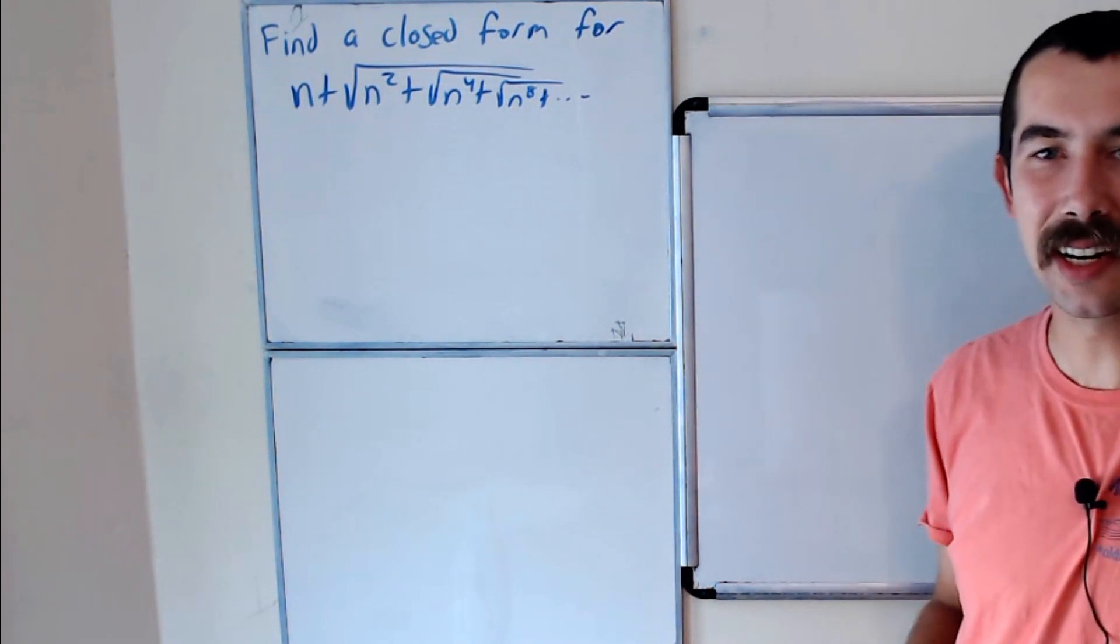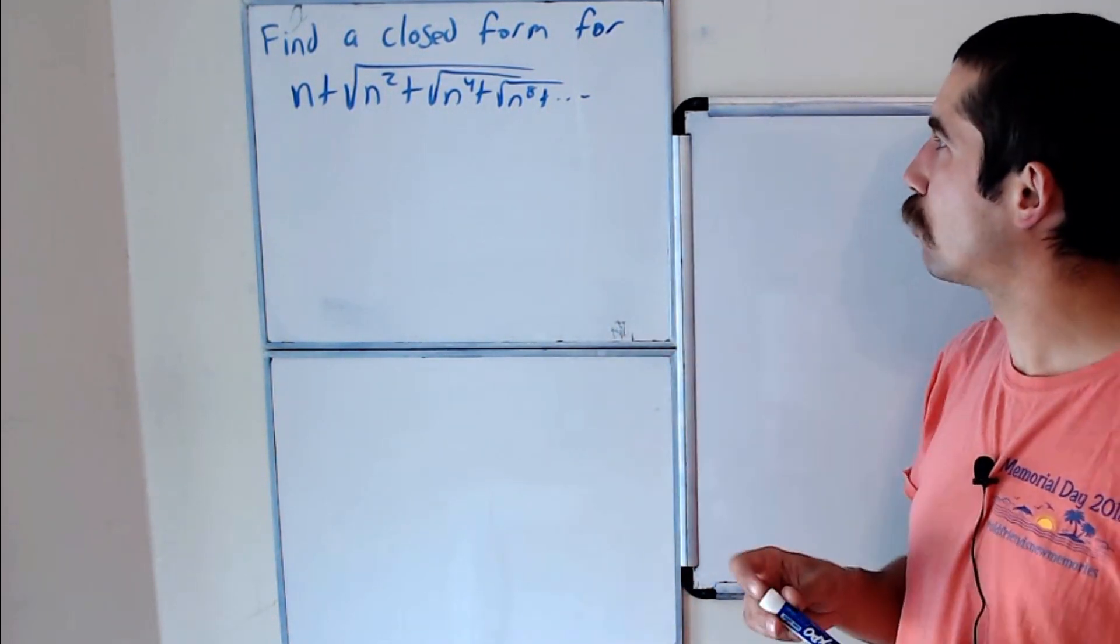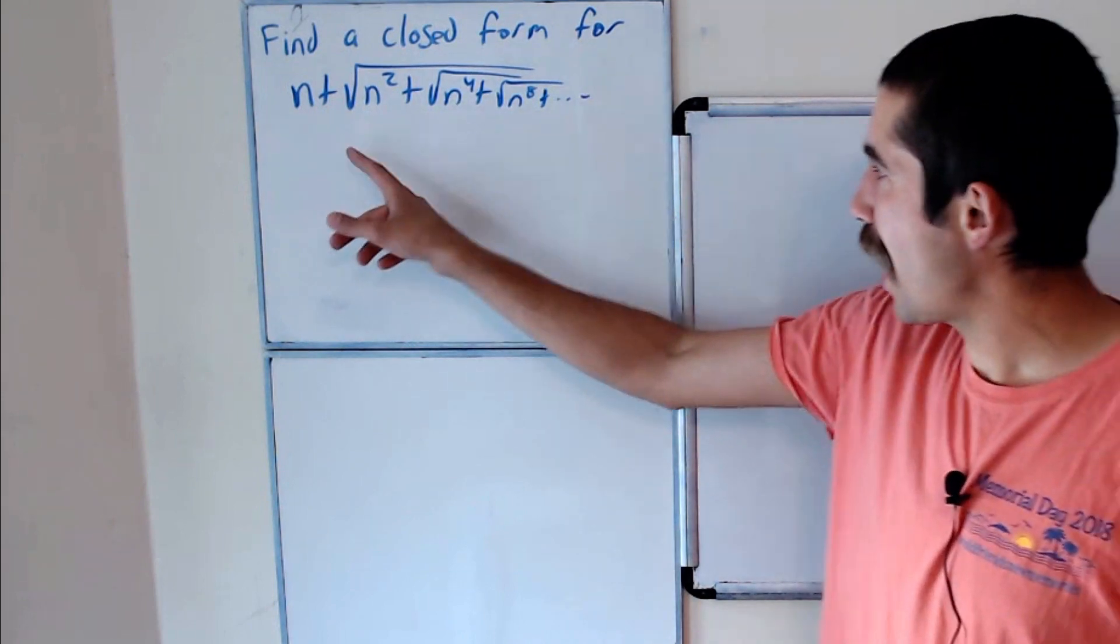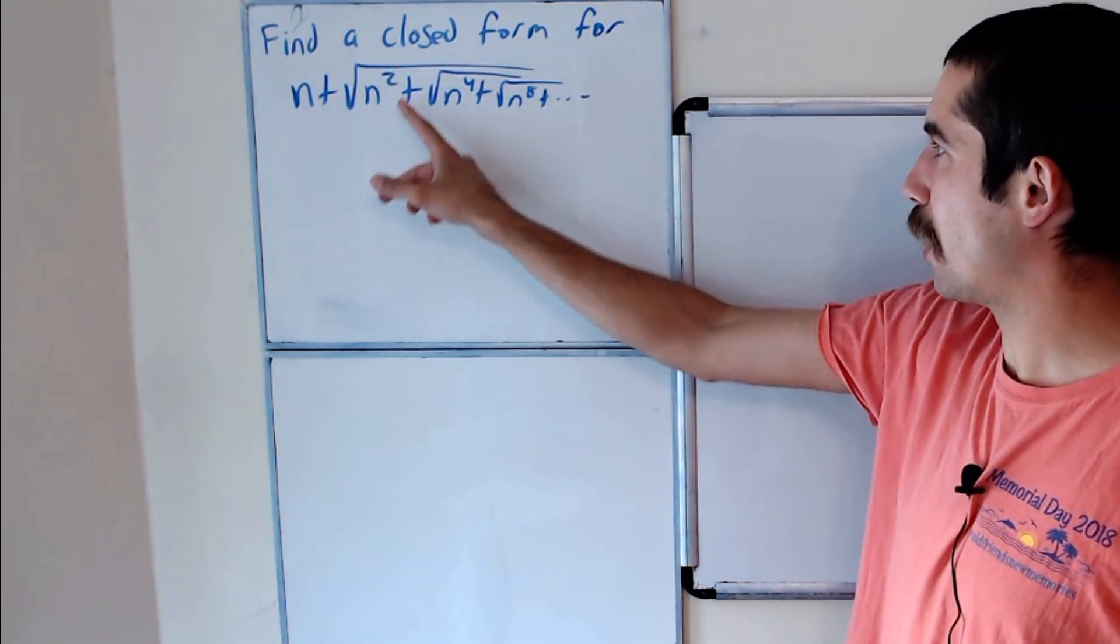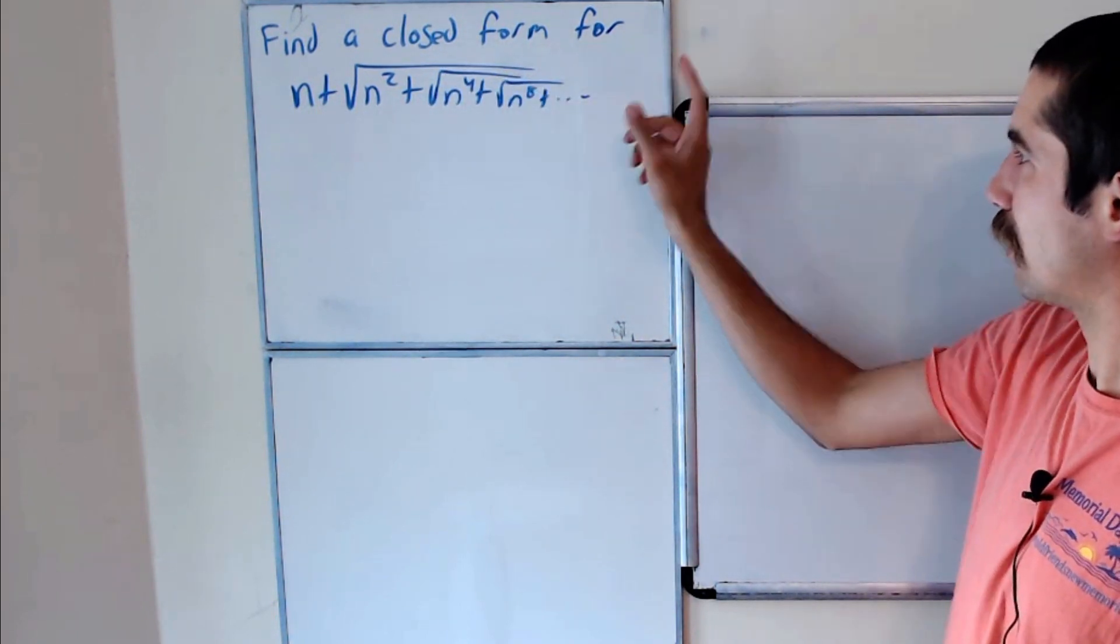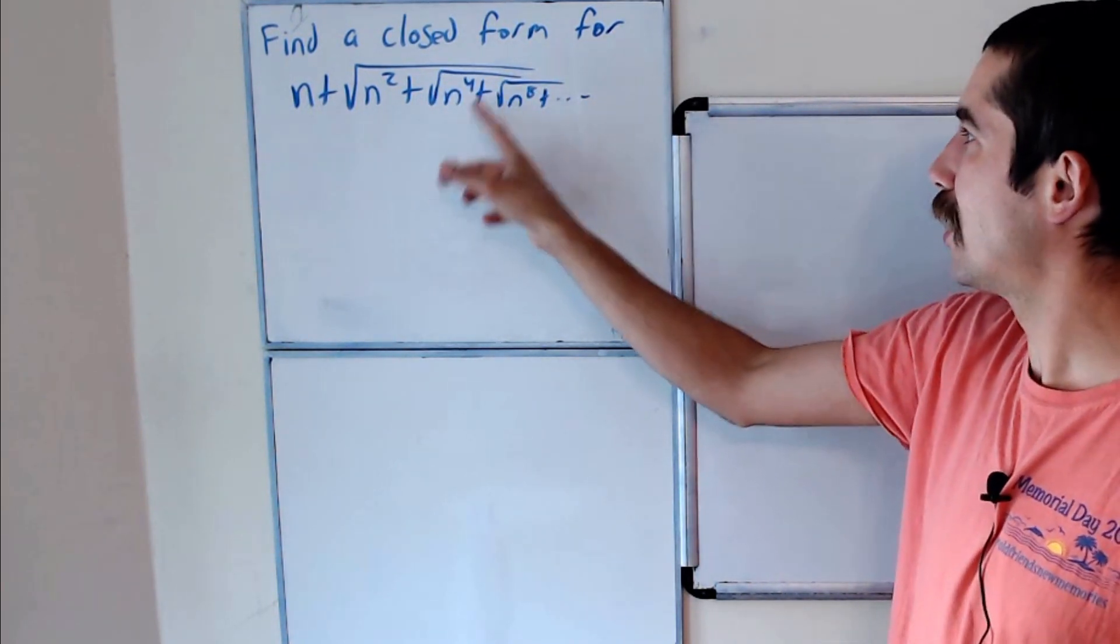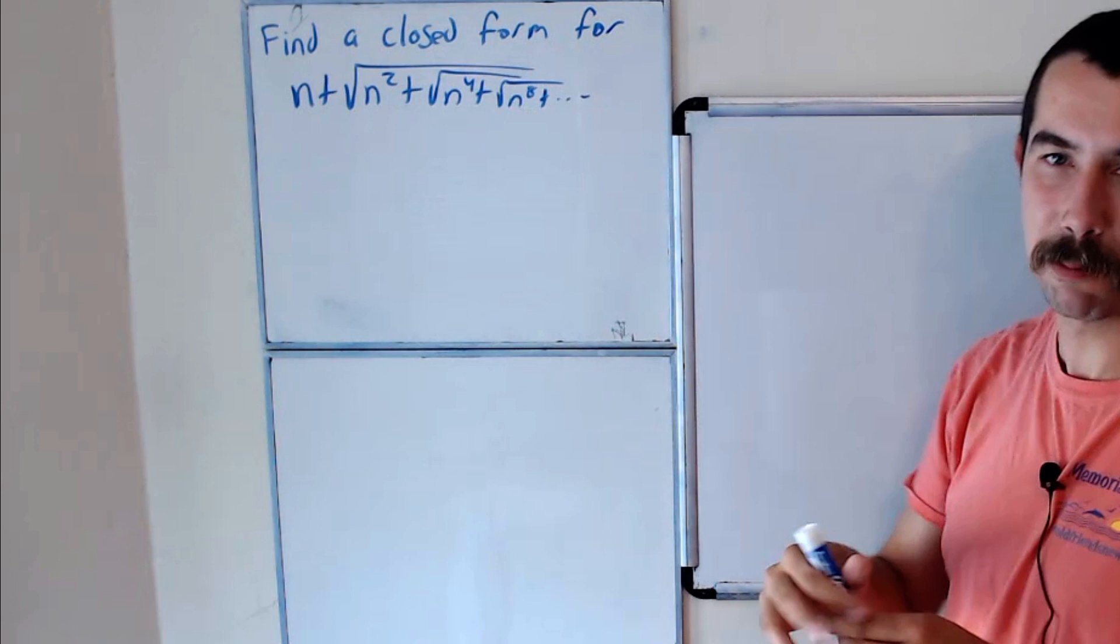I got a challenge for you today that I think you're really going to like. Find a closed form for n plus the square root of, now everything's inside the square root, n squared plus the square root of, again everything's going to stay inside of that square root, n to the fourth plus the square root of n to the eighth plus and so forth.